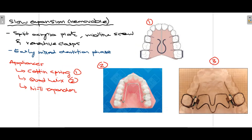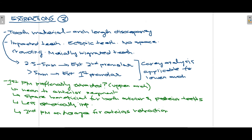The second type is slow expansion appliances, which are mostly removable. These removable slow expansion appliances mainly consist of a split acrylic plate, a midline screw, and retentive clasps. They are most beneficial when used in the early mixed dentition phase. The three appliances used for slow expansion are: the Coffin spring, the Quad Helix, and the Nite-Guide expander.